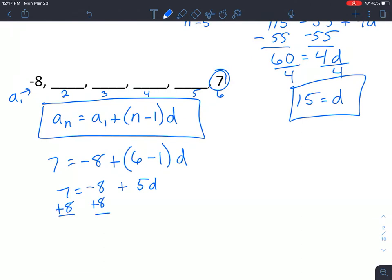Add 8 to both sides. Divide both sides by 5. So it looks like the difference between each of our terms is 3. Now we're just going to use that to find our missing numbers.